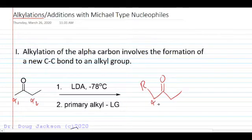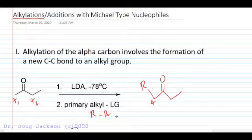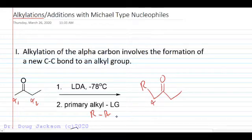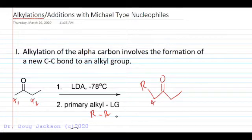There's the original alpha carbon from the enolate, and a primary alkyl group is necessary because it's an SN2 type reaction. We're trying to avoid E2 competition from the enolate reacting as a base with our alkyl halides, so we stick to primary alkyl halides.